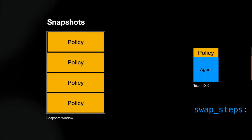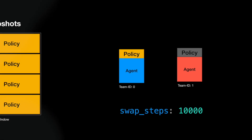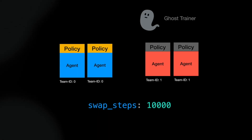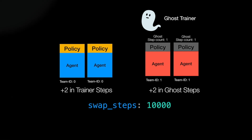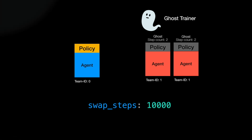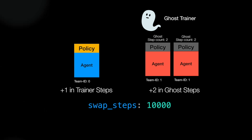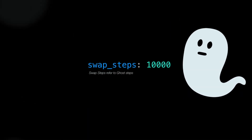The steps that swap steps refers to are not trainer steps, but ghost trainer steps. The agents in the fixed policy team are managed by the ghost trainer, and each environment step, the ghost steps are increased by the number of agents trained by the ghost trainer. As long as the teams are equally sized, there is no difference. But if you are going with a two versus one setup, for example, it's something you should be aware of. Just remember, swap steps are only relevant for the team with the fixed policy, so it's referring to ghost steps.